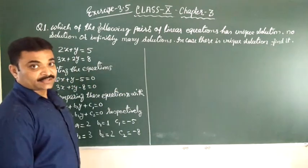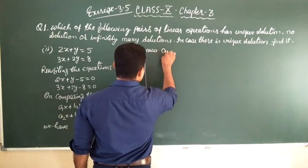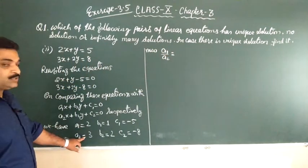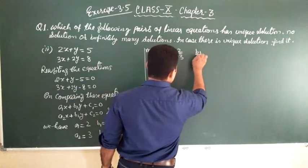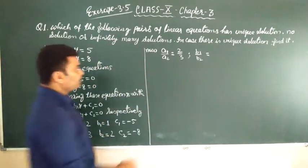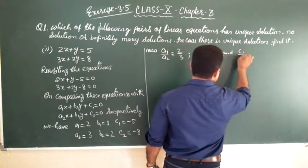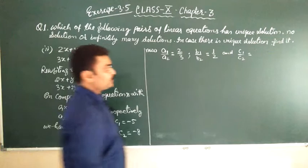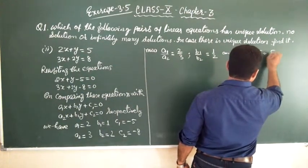Now students, we will find the ratios. a1 upon a2 is equal to 2 upon 3, b1 upon b2 is equal to 1 upon 2 and c1 upon c2 is equal to minus 5 upon minus 8 which is equal to 5 by 8.